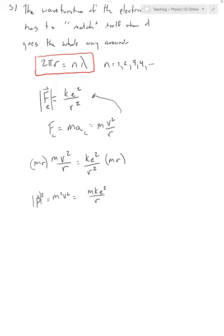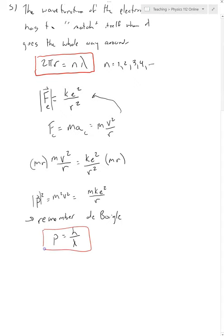That may not be super interesting yet, but if you remember, we already have a relationship that relates momentum to wavelength. Remember De Broglie — that guy whose name is hard to pronounce — De Broglie said that momentum is equal to H over lambda. This is also a really important equation because this is the second time that we bring in quantum mechanics. Only the two boxed equations are actually quantum mechanics; the rest of this is just normal mechanics.